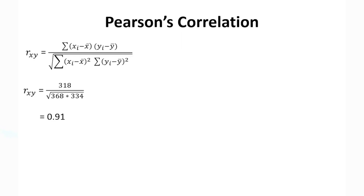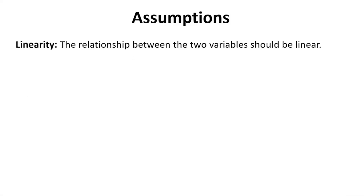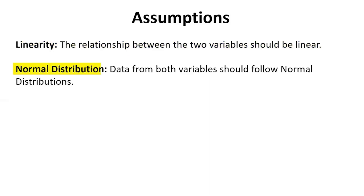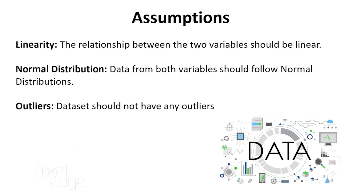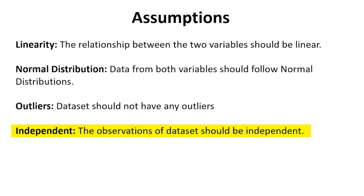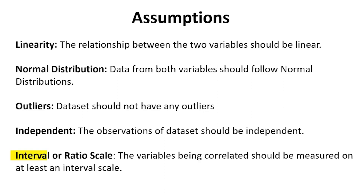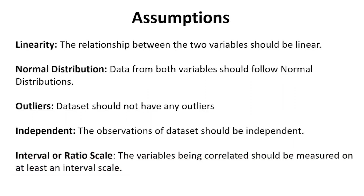Let's now discuss the key assumptions behind Pearson's correlation, as satisfying these is essential for correct interpretation. First, there must be a linear relationship between the two variables — this is the primary prerequisite. Second, the data from both variables should follow a normal or nearly normal distribution. Third, outliers should not be present, as they may distort the normality of the data. Fourth, the observations should be independent — each XY pair has no connection to others. Lastly, the data should be measured at least on an interval or ratio scale; Pearson's correlation requires continuous data.